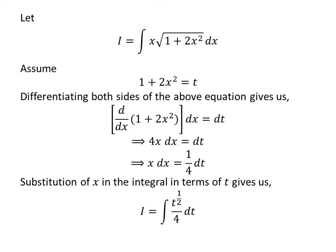In the integral i, let us substitute 1 plus 2 times square of x by our assumed value t, and x times differential of x by 1 upon 4 times differential of t. So we get i is equal to integral of t raised to the power of 1 upon 2, times 1 upon 4, with respect to t.